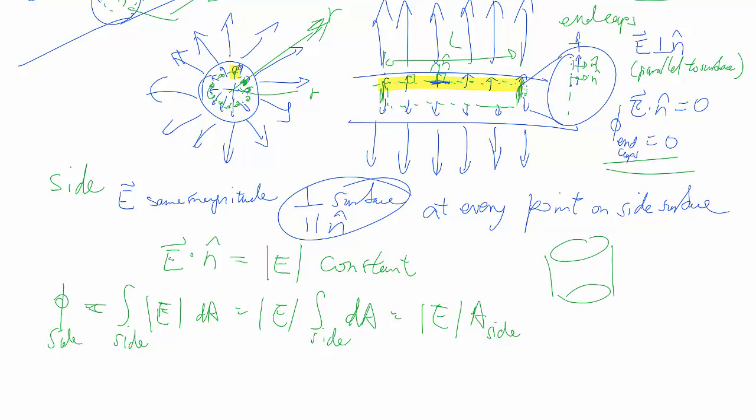Now the area of the side of a cylinder: if you cut a cylinder like this and you spread it out, you end up with a rectangle. The rectangle has a certain height l, and if this is the radius r, this would be the circumference all the way around of 2πr. So that's 2πrl, and then the magnitude of E. So that's one half of your Gauss's law.